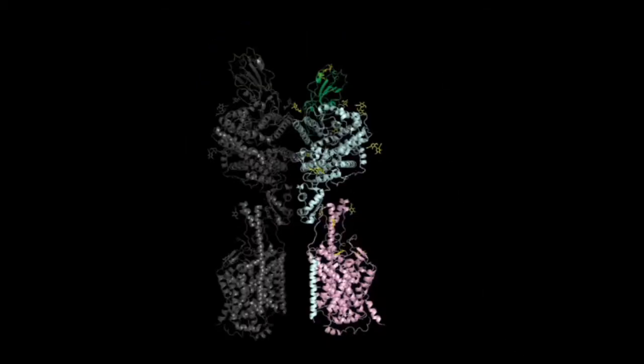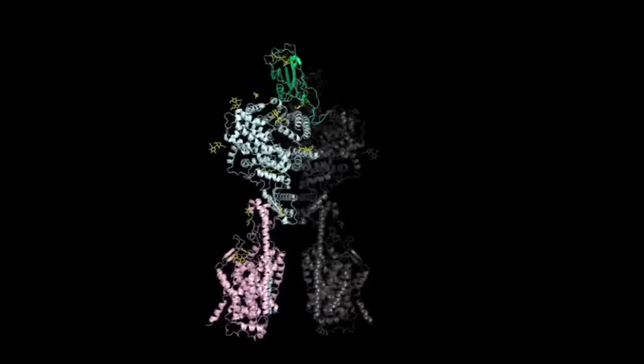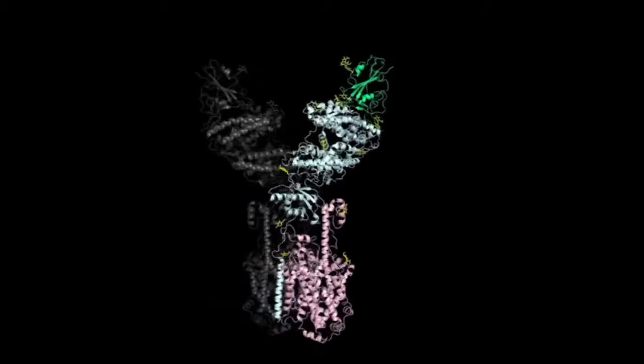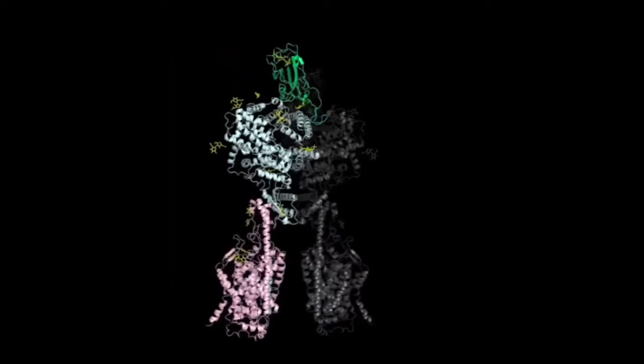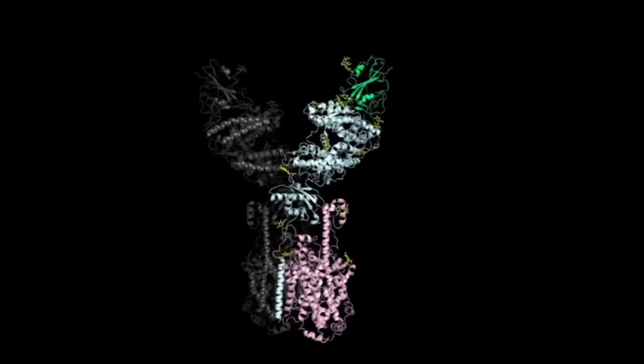Each monomer in itself is a heterodimer, consisting of one ACE2 molecule, colored in light blue, and one B081 molecule, colored in pink. One receptor-binding domain of SARS-CoV-2, highlighted in green, is located on the top of the heterodimer.